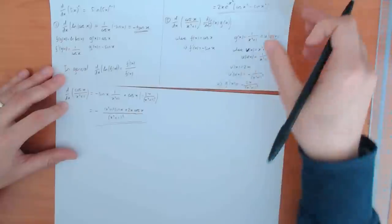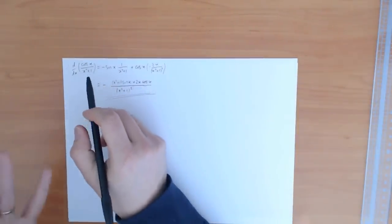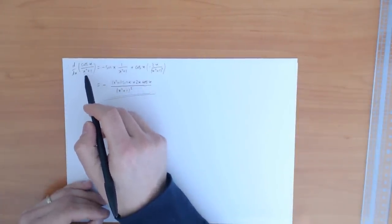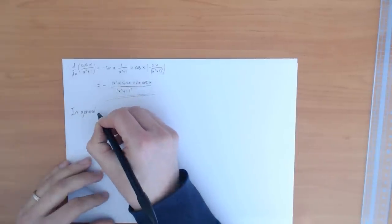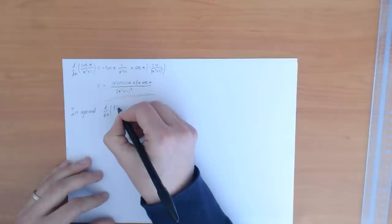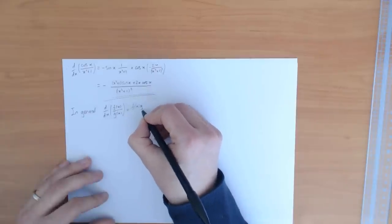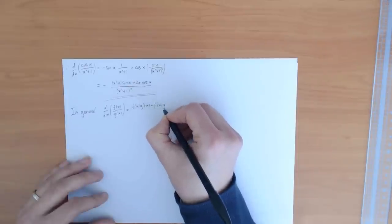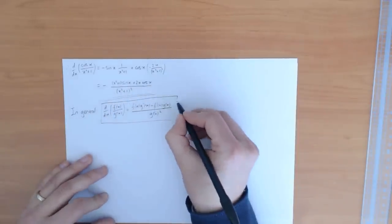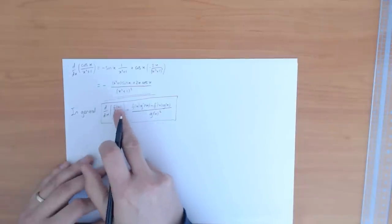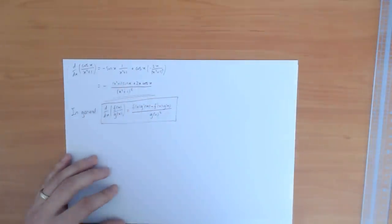This is about as difficult a question as you will get in this course — this is about as hard as the derivatives get. To calculate it we used the product rule once and the chain rule twice. There is also a general quotient rule formula: the derivative of f over g equals (f of x times g prime of x minus f prime of x times g of x) divided by g of x squared. Some people like to remember this; otherwise you can work it out using the chain and product rules as I did here.